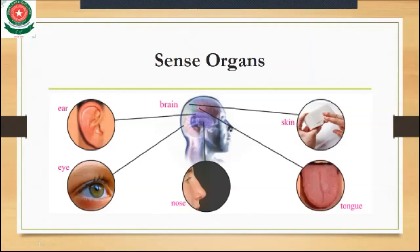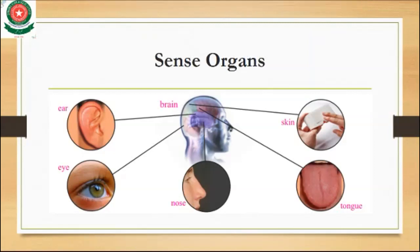Our sense organs — your eye, your ear, your nose, your tongue, and your skin — these are all connected to your brain. Sense organs are the special parts of your body that tell you what is going on around us.